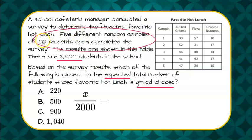We know that five random samples of 100 students, so 500 students were surveyed and out of the 500 students surveyed this many picked grilled cheese. So if I add up all these values I'm going to get 219 out of 500 students that were surveyed.